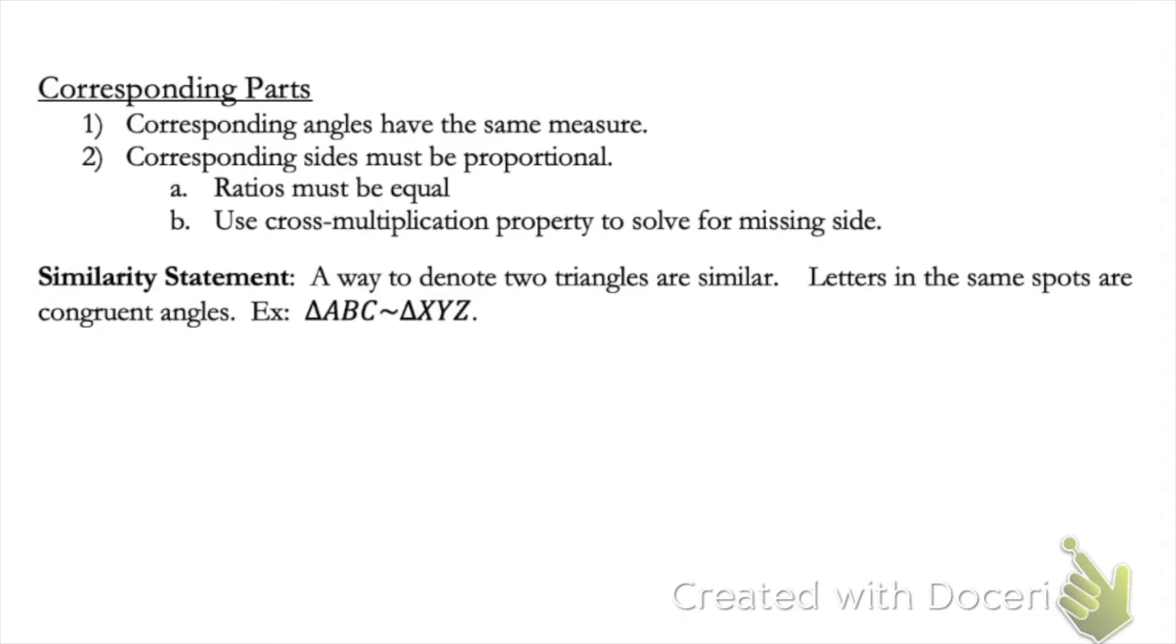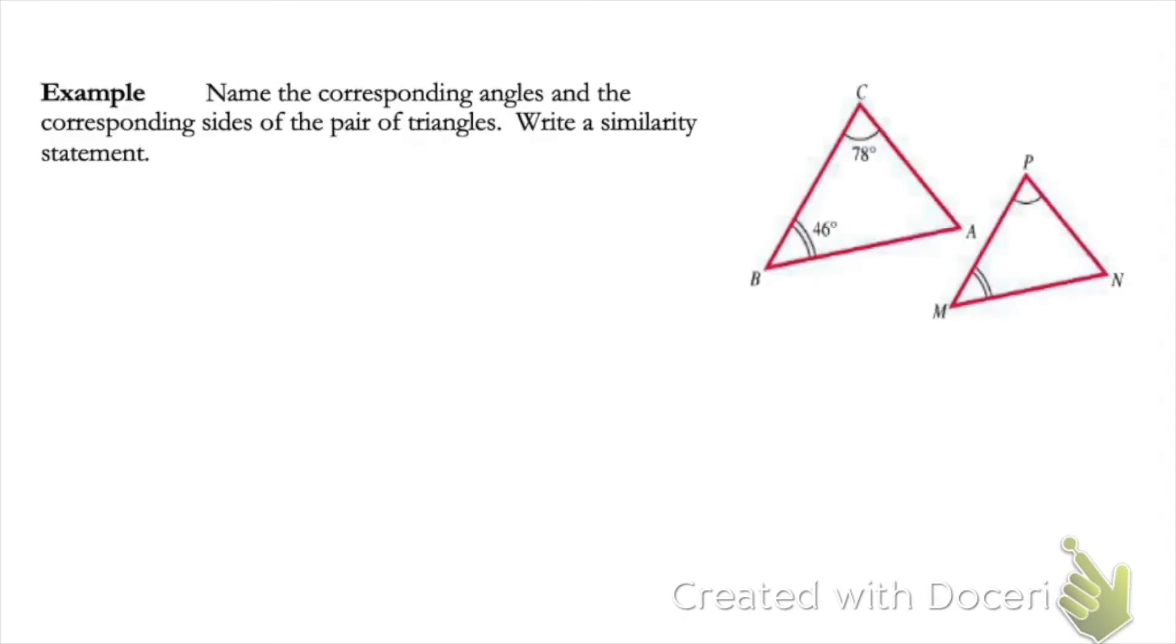Let's look at an example. In this example, we're going to name the corresponding angles and the corresponding sides of each pair of triangles. I know that angle C is corresponding to angle P because they have the congruent mark on them. Same thing with B and M, and then leftover I have A and N as corresponding as well.